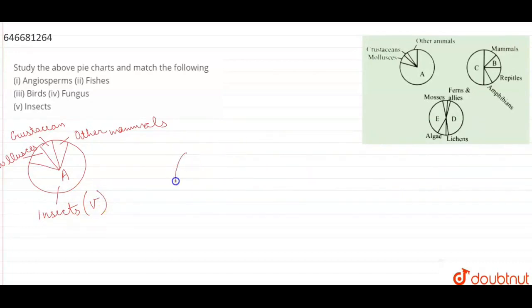The second pie chart shows various vertebrates. This is the pie chart for vertebrates. That is mammals, reptiles, and amphibians.